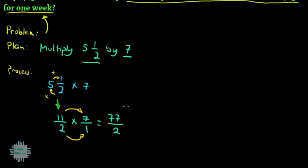Now, ito na ang ating magiging final answer kung si 77 over 2 o si 77 halves ay simplified na or naka-lowest term na siya.